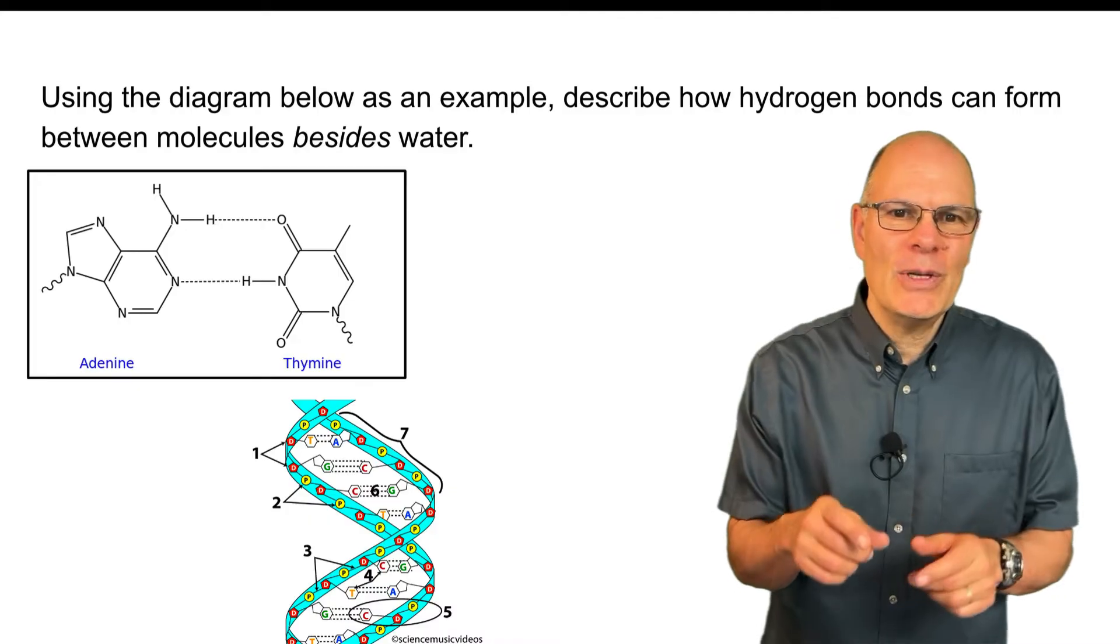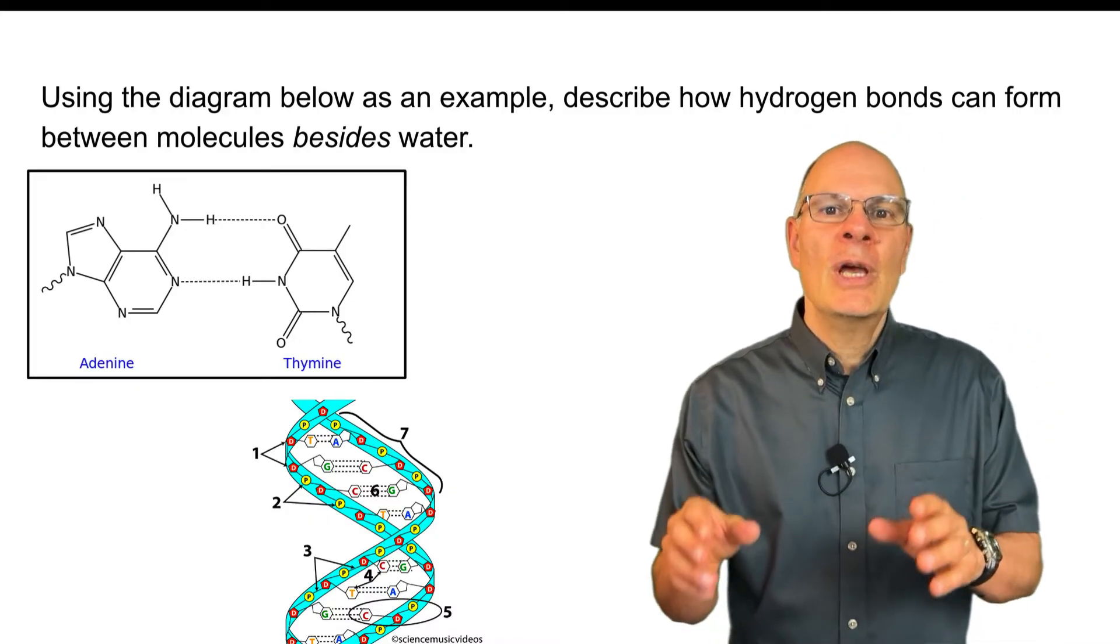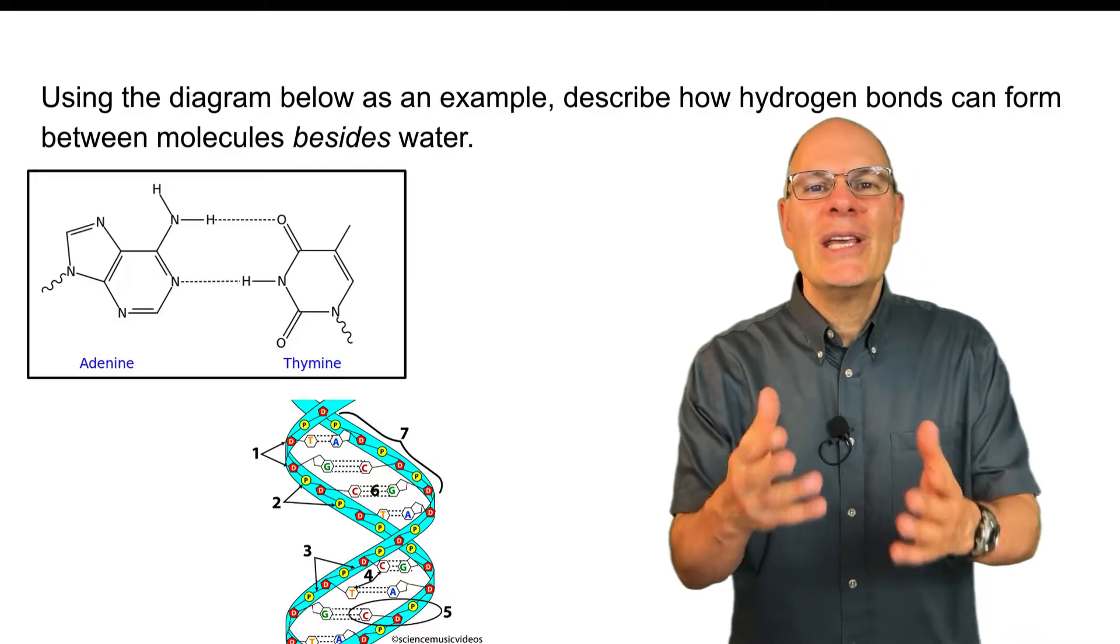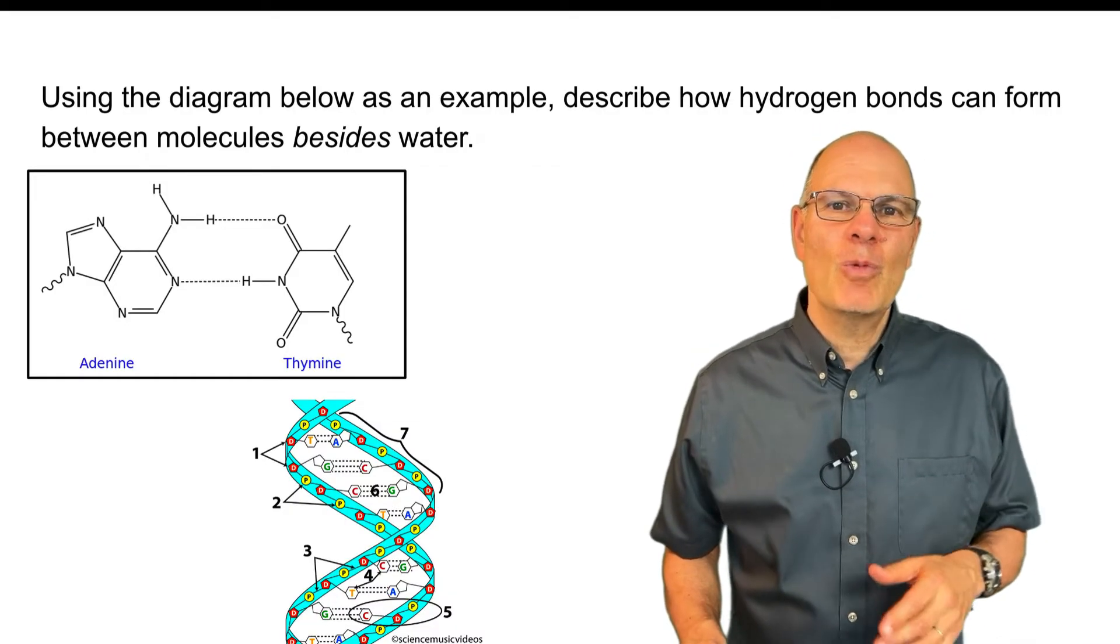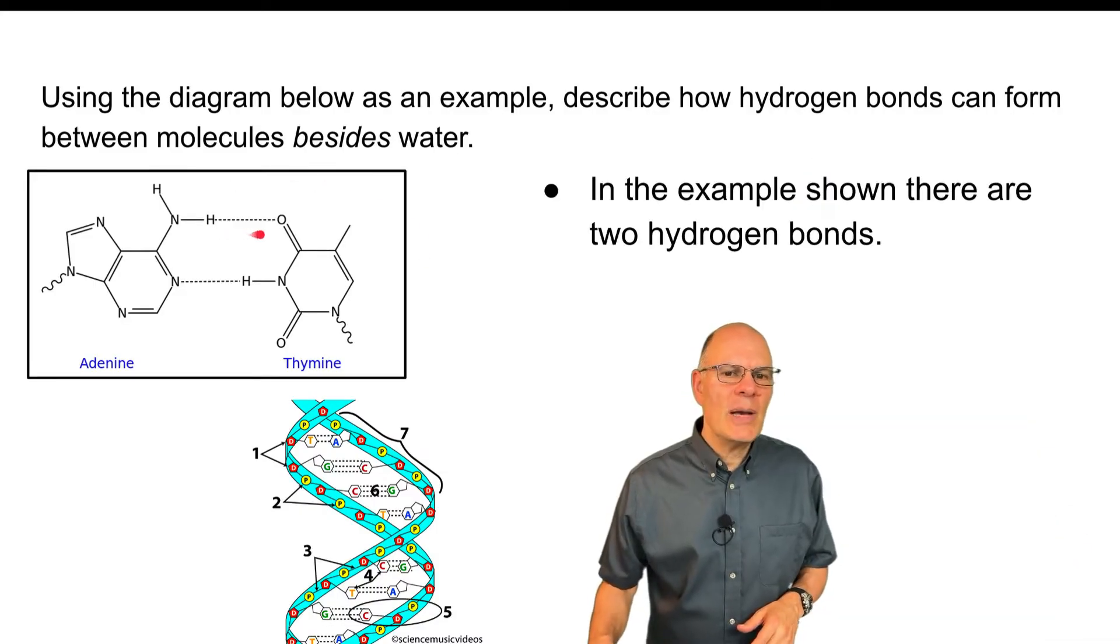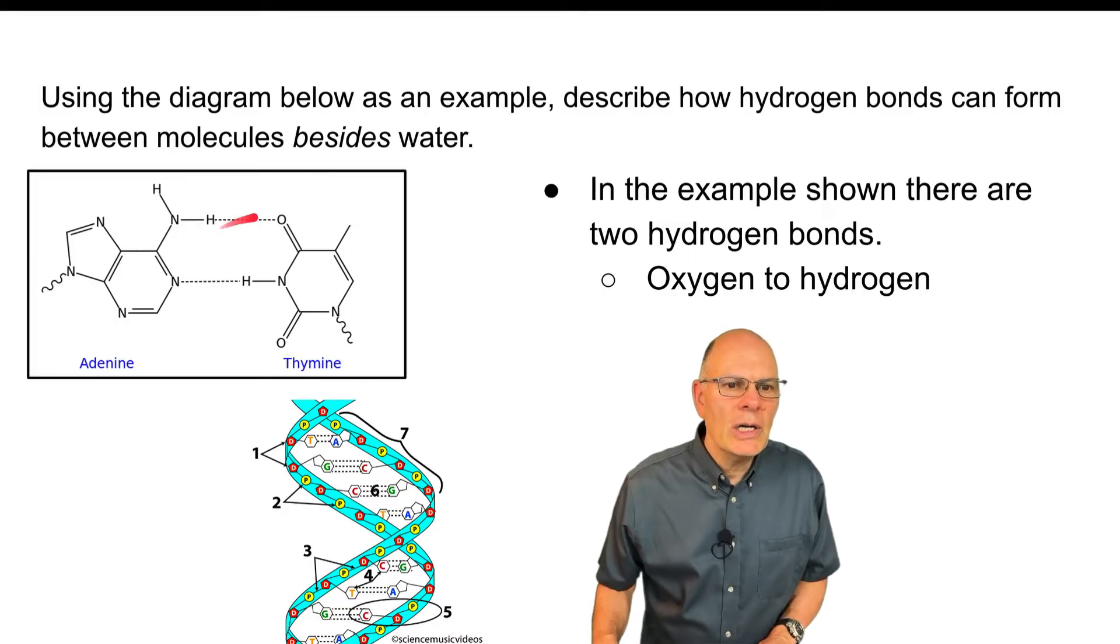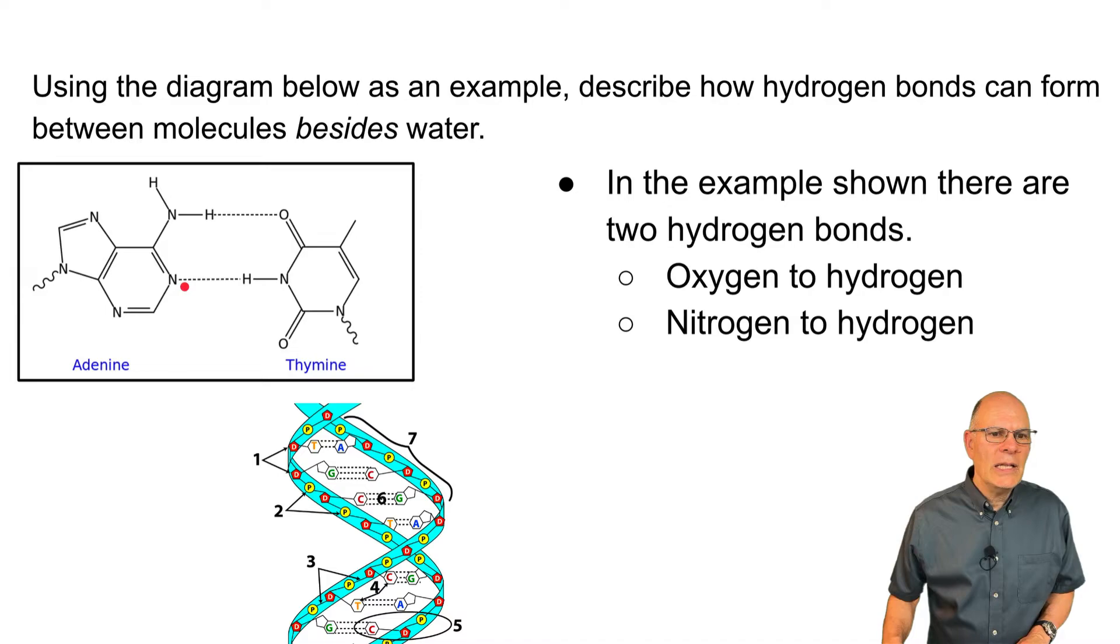Using the diagram below as an example, describe how hydrogen bonds can form between molecules besides water. The key idea is that hydrogen bonds are everywhere. They're not just within water. They're essential in biology in general. So in this example, there are two hydrogen bonds, and here's one oxygen to hydrogen over here. Here's another one between nitrogen and hydrogen. This is between the nitrogenous base, adenine and thymine. And these are the hydrogen bonds that hold together DNA.